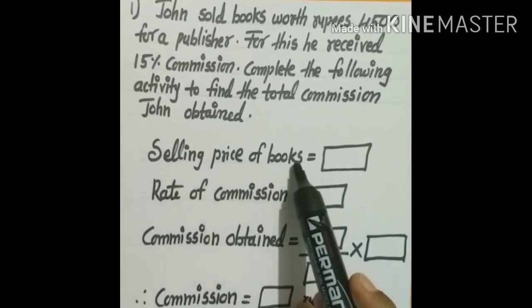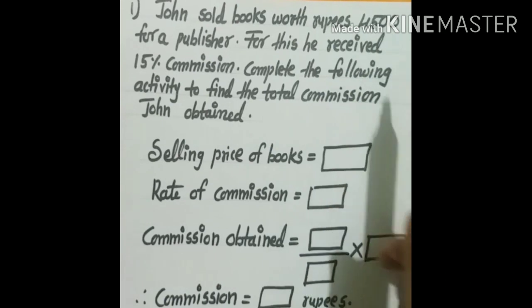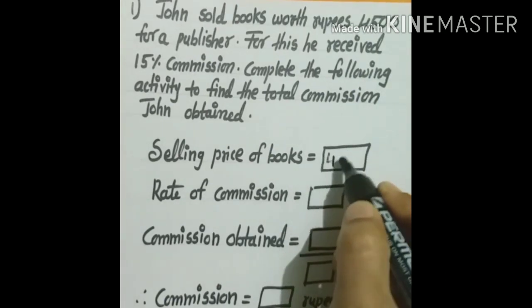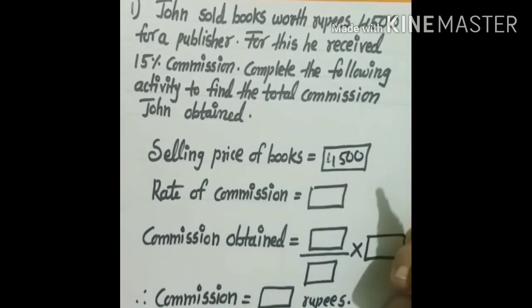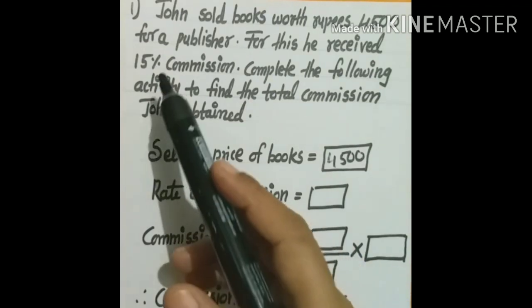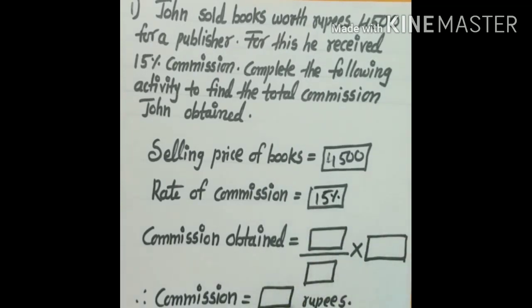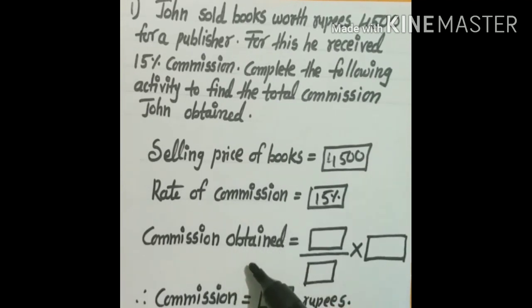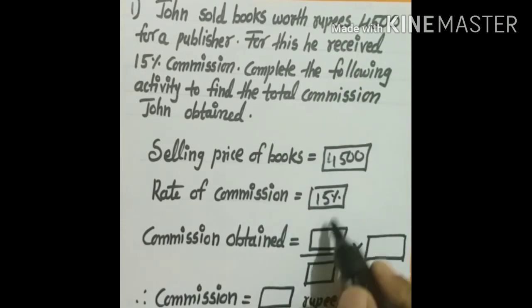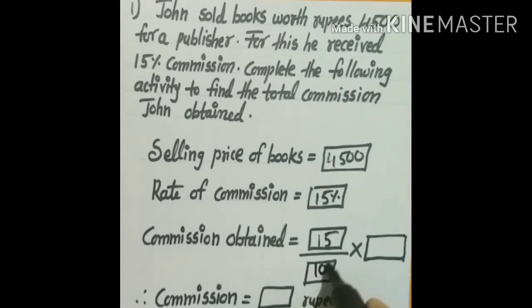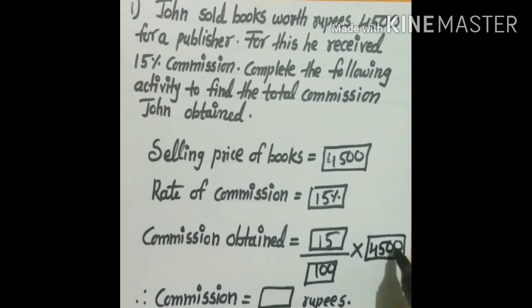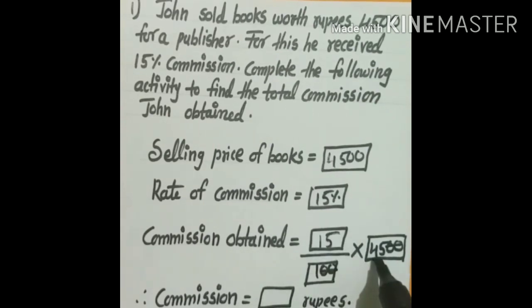First, the selling price of the books is ₹4500 — write that in the first box. Next, the rate of commission is 15% — write 15%. Now to find the commission in rupees: 15% means 15 upon 100, multiplied by the selling price 4500. After cancellation, 100 and 4500 give us 45, so we calculate 15 × 45.